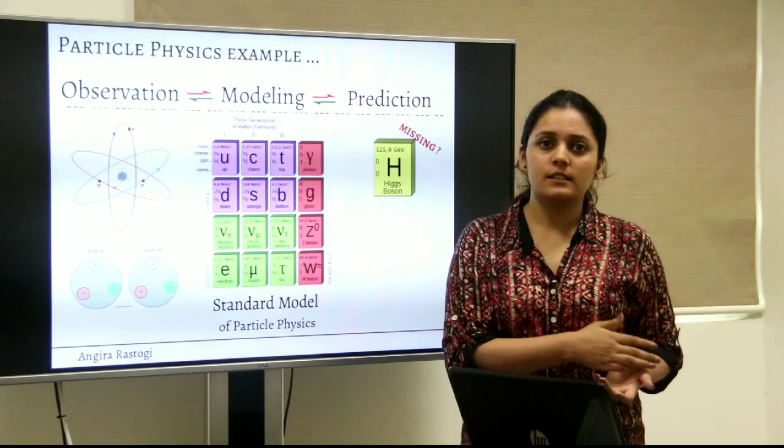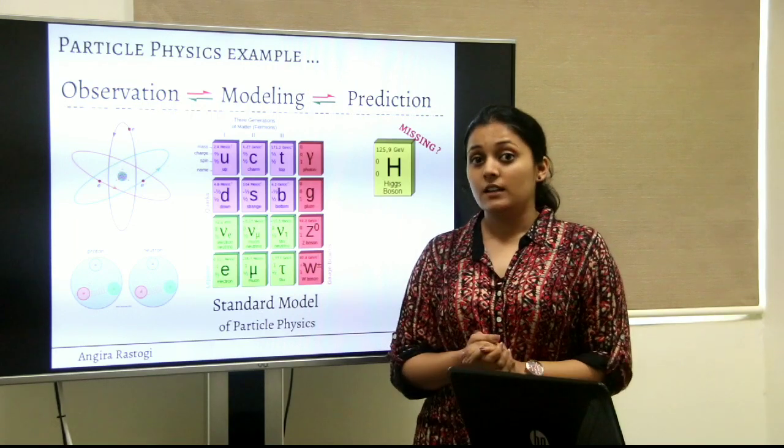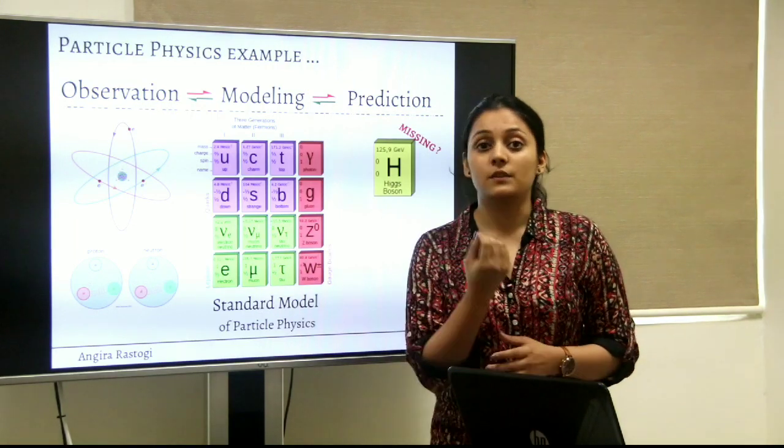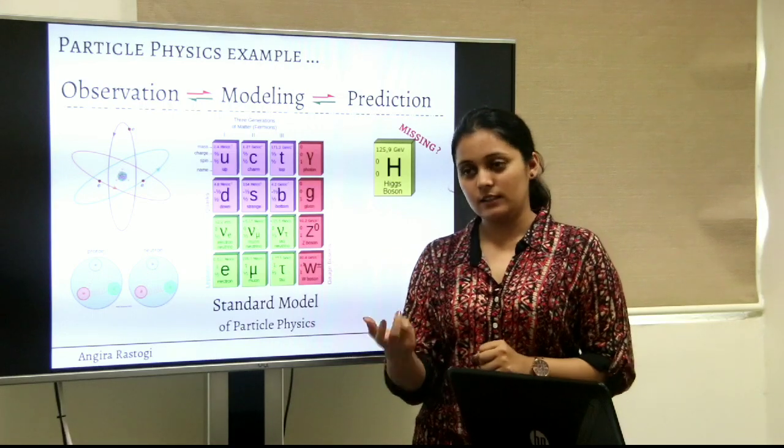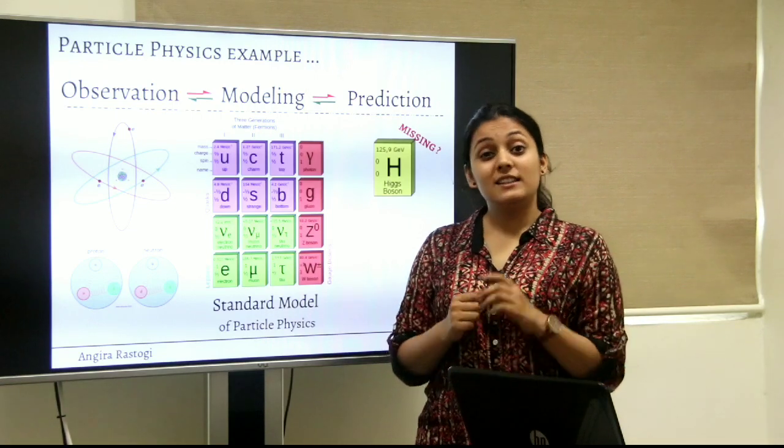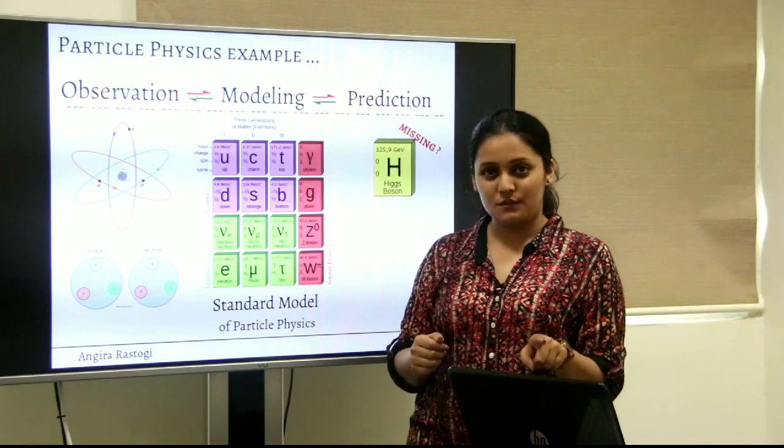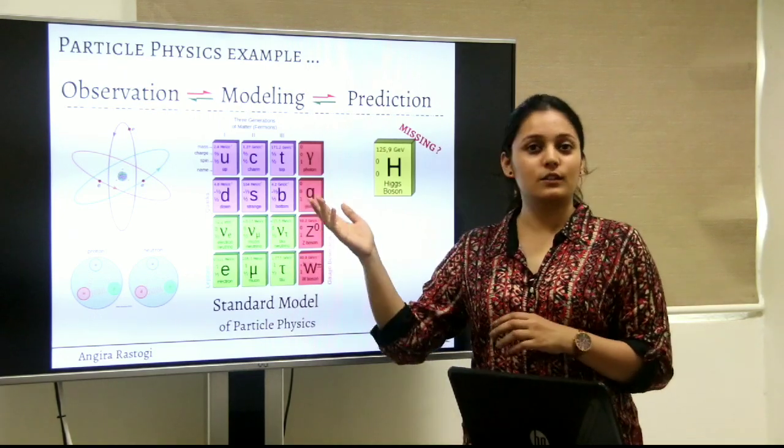So for example, in early 20th century, we started observing structures of atom. It is not fundamental. It is made up of electrons which are fundamental. There is also a nucleus in the center which has two different species of particles, protons and neutrons. And these protons and neutrons are also not fundamental. They are made up of even smaller particles called quarks and gluons.